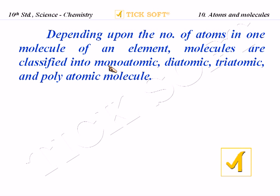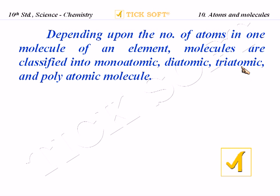The first type is monoatomic — 'mono' means one, so that molecule has only one atom. Next is diatomic — 'di' means two, so this molecule has two atoms. Then triatomic — 'tri' means three, so this molecule has three atoms. And polyatomic means more than three atoms.